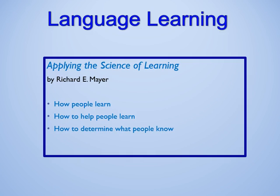In this clear and concise first edition text, educational psychology scholar Richard Mayer teaches readers how to apply the science of learning through understanding the reciprocal relationships between learning, instruction, and assessment. Utilizing significant advances in scientific learning research over the last 25 years, this introductory text identifies features of the science of learning most relevant to education, explores prescriptions for instructional methods, and highlights the essentials of evaluating instructional effectiveness through assessment.